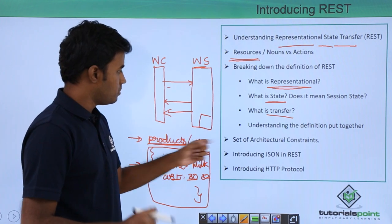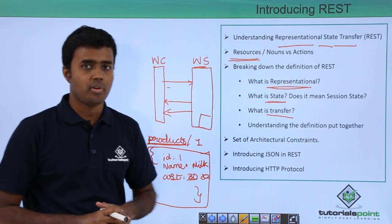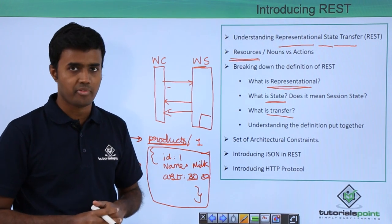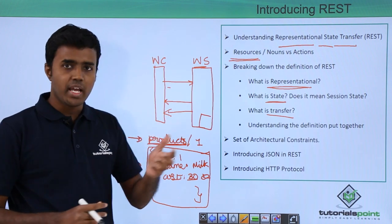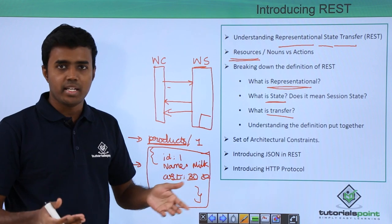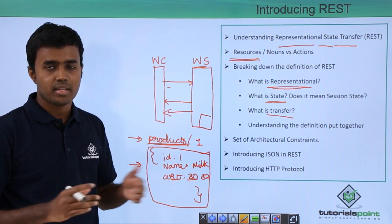REST is nothing but a set of architectural constraints. There are six different constraints that are defined. If you take any web service and implement all the different architectural constraints, finally you will end up with something called REST.